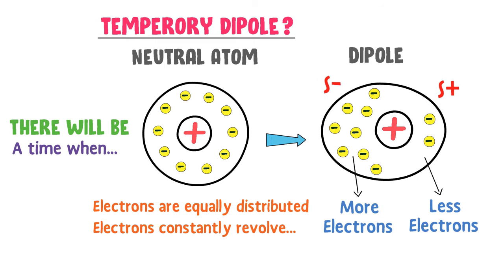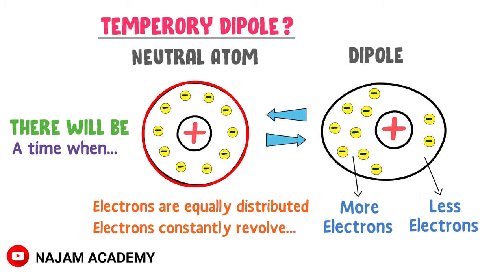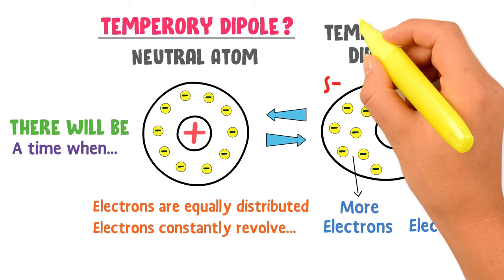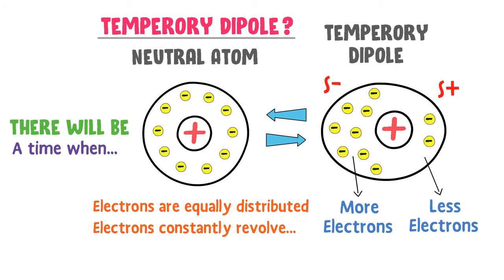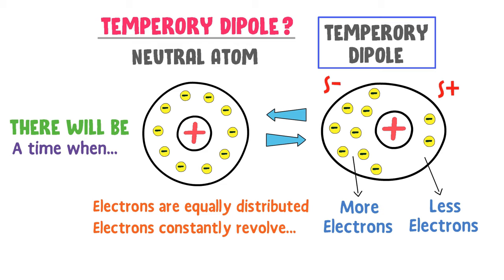There will be a time when these electrons are again equally distributed. The positive and negative poles will vanish, and this dipole will again become a neutral atom. So we learn that this atom instantly becomes a dipole and instantly becomes a neutral atom. Therefore, we say that this dipole is a temporary dipole. Remember that a temporary dipole is a dipole when the electronic cloud of a neutral atom is distorted for a time being.